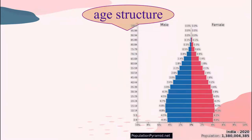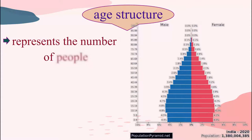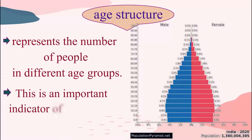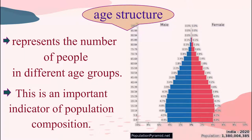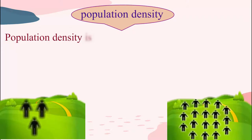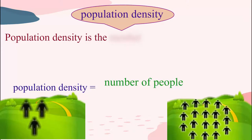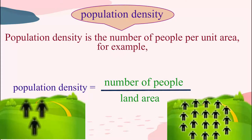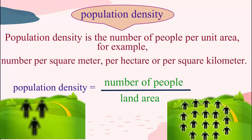Age structure represents the number of people in different age groups. This is an important indicator of population composition. Population density is the number of people living in a unit area of the earth's surface, and it is normally expressed as per square kilometer.